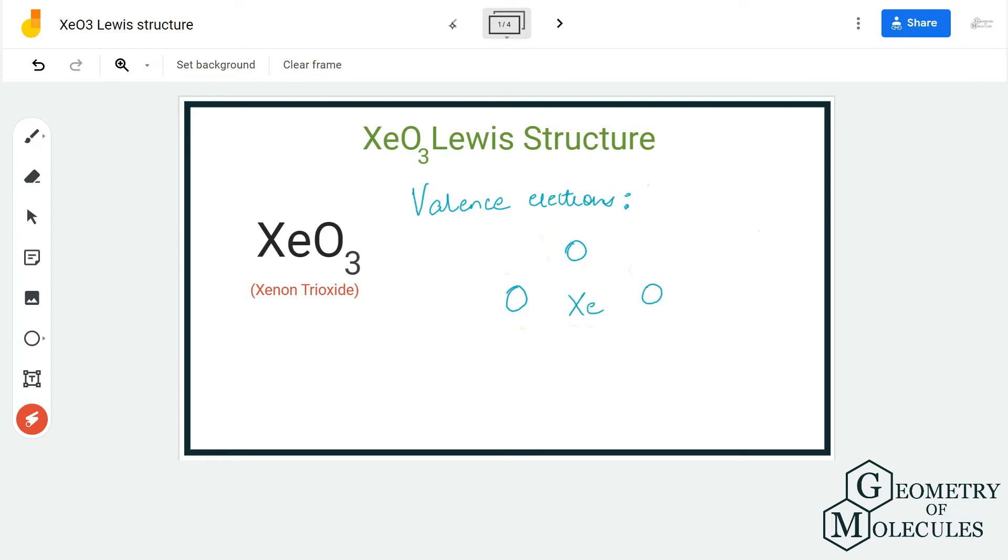the total number of valence electrons followed by the arrangement of atoms in this molecule. Xenon has eight valence electrons in its outer shell, and oxygen has six valence electrons in its outer shell. But as there are three oxygen atoms, we are going to multiply this number by three, which gives us 26 valence electrons for this molecule.